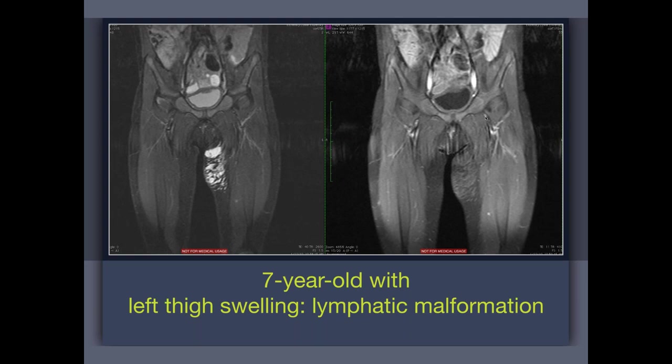Why does this distinction matter? If it's a lymphatic malformation, you'll do sclerotherapy. If it's a venous malformation, you can do sclerotherapy or the newer treatment I'll show you. On MRI: T2 on the left, T1 post-contrast on the right — a bunch of channels, not mass-like. When you give contrast it doesn't enhance internally. Also notice at the superior end there's a bigger cyst and then smaller cysts — that's the macro-cyst versus micro-cyst distinction, typically defined as two centimeters or greater for macro-cysts. This distinction matters for treatment: macro-cystic ones are easier to treat because you can get a catheter in, deliver sclerosant, and ensure complete filling.